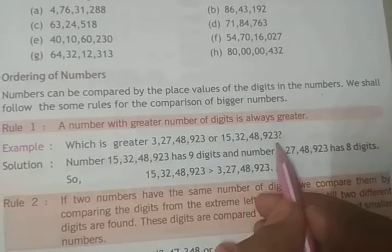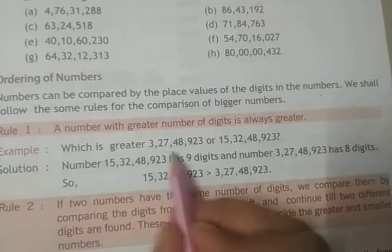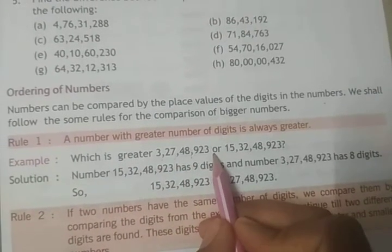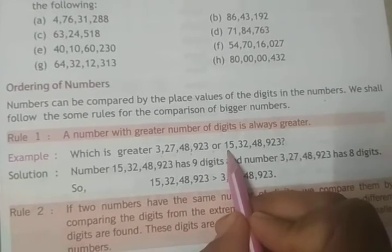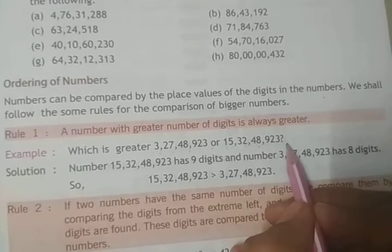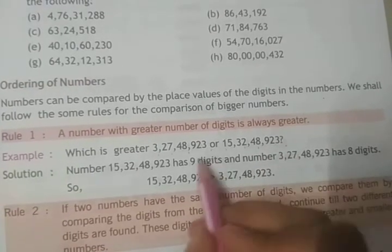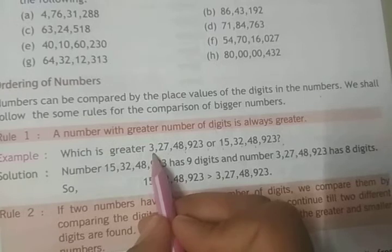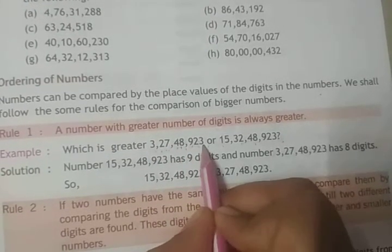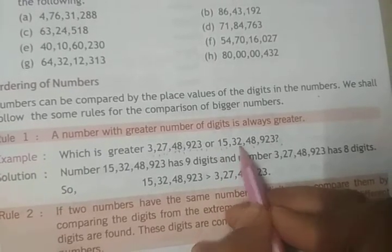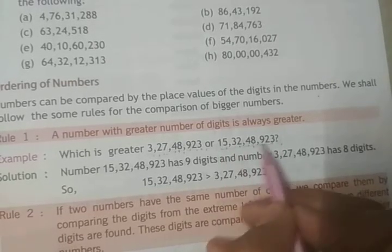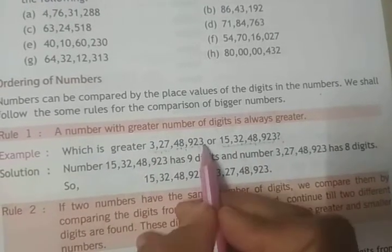First rule is: a number with a greater number of digits is always greater. Here we need to find which is greater: 3,27,48,923 or 15,32,48,923. We will count the total digits. The first has 8 digits, the second has 9 digits. So this number is greater than this number.